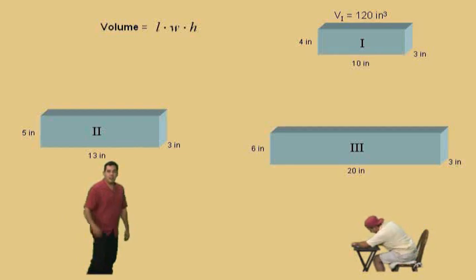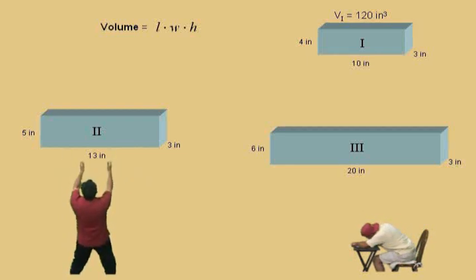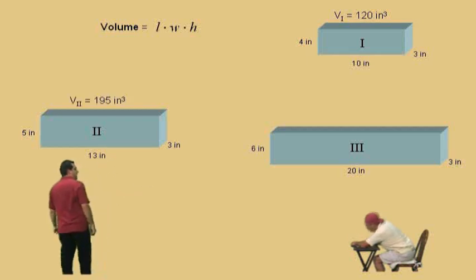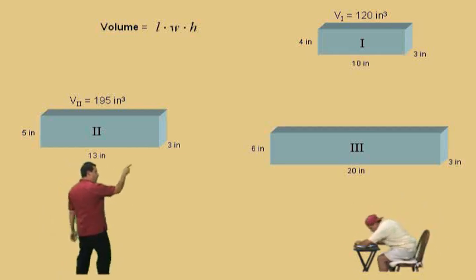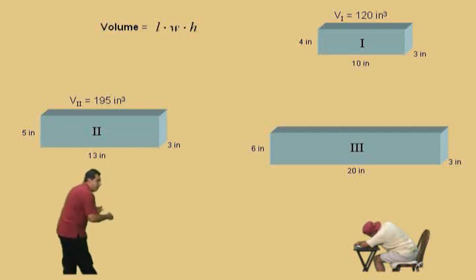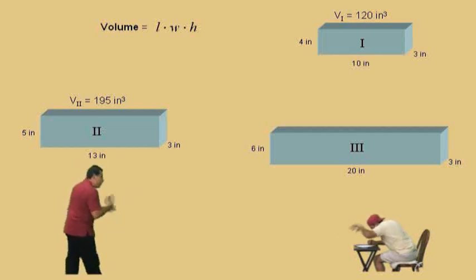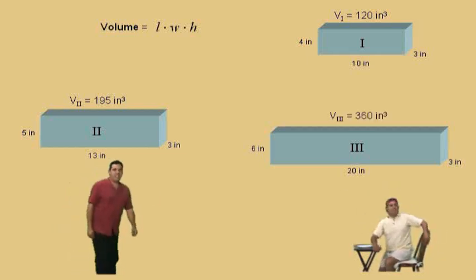Okay, let's do rectangular solid number two. Go for it, Charlie, bust a move. 195. Very nice, Charlie. Charlie's on today. Okay, now we've got this last one to do. It's over there, rectangular solid three. This is a tough one, right? You've got twenty times three. Go ahead, Charlie. Don't let me distract you. What do you get, Charlie? Three hundred and sixty. Very nice, Charlie, there we go. So, we have the volumes of our three rectangular solids all listed up there for you.